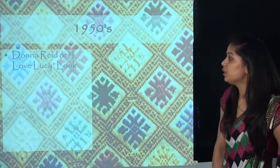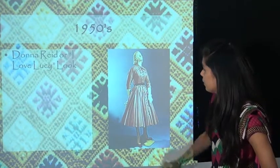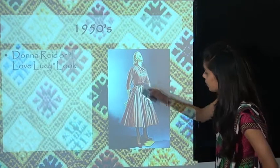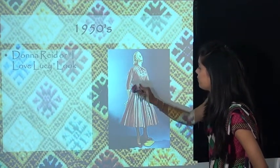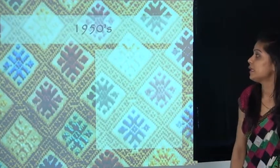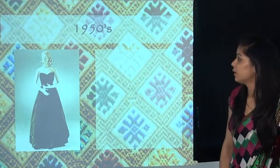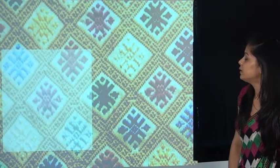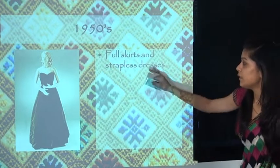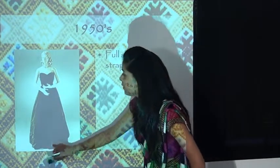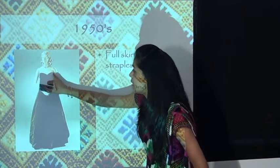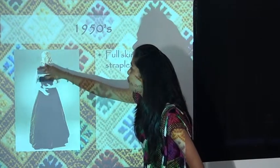The 1950s brought the Dior 'I Love Lucy' look. We can see this kind of full flared garment with a waistline used for a slim waist. Fashion in the 1950s also featured full skirts and strapless dresses — we can see this full flared formal gown with a sweetheart neckline, which was off both shoulders.